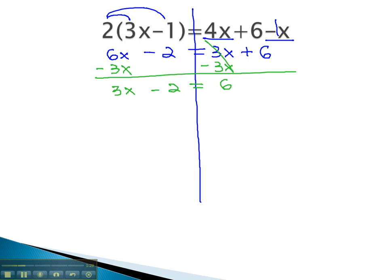Now we can solve the remaining two-step equation, moving away from x by first adding 2 to both sides, giving us 3x equals 8, and finally dividing both sides by 3 to get our final solution, x equals 8 thirds.